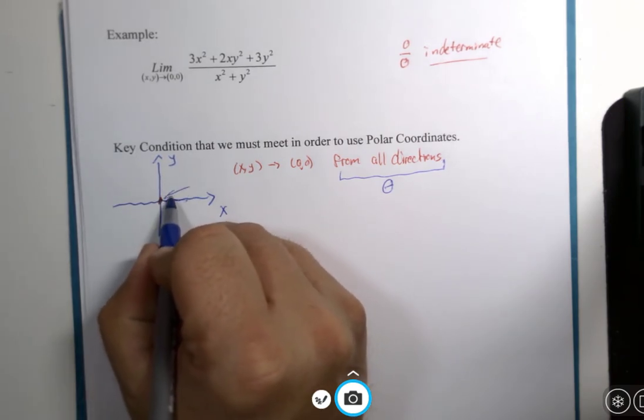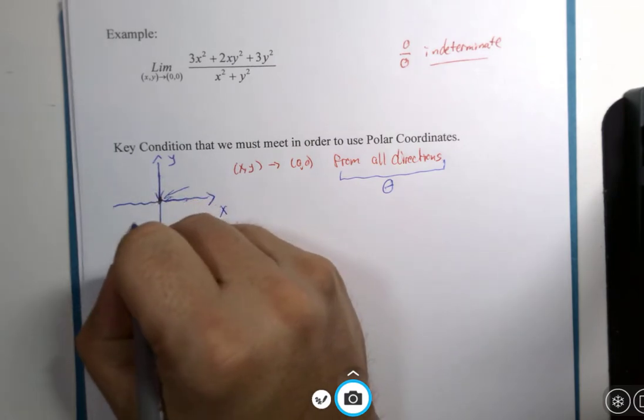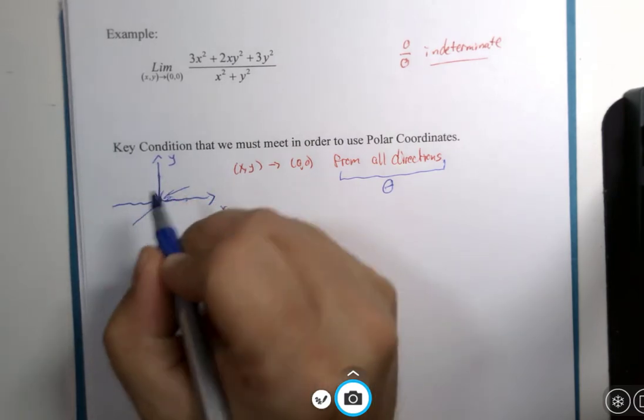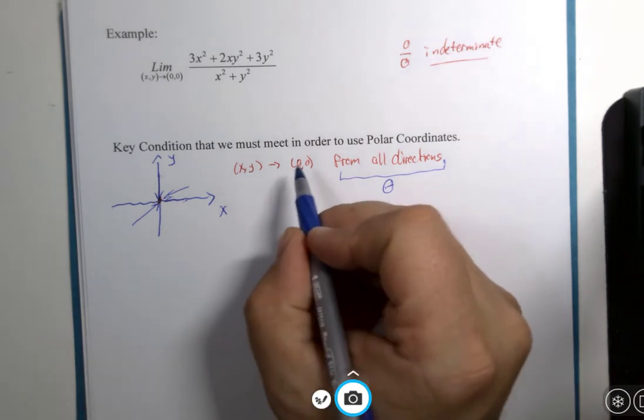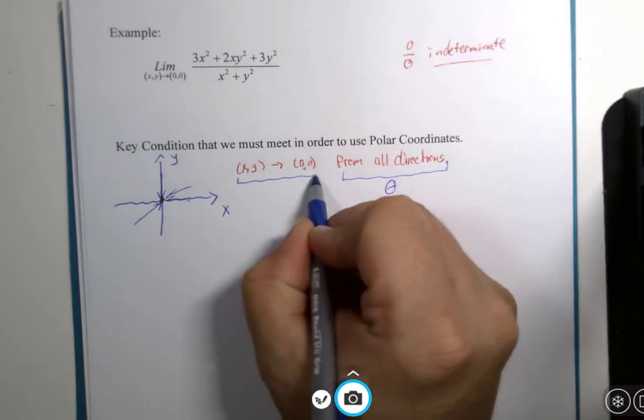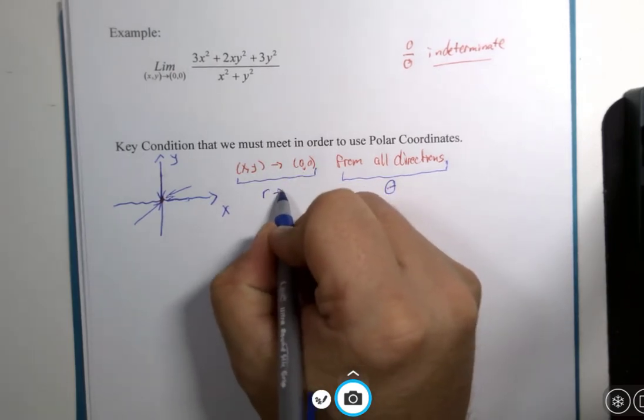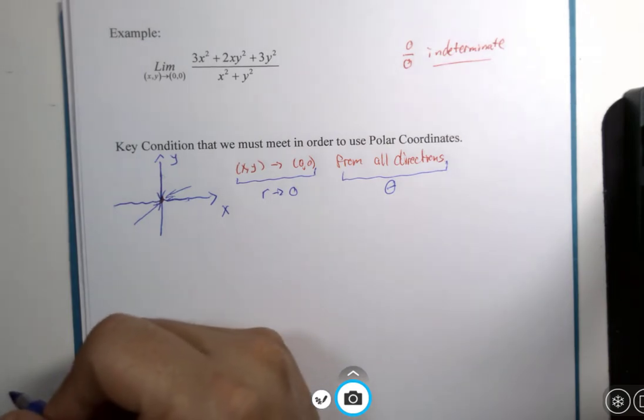Theta would be our direction. Theta could be zero, theta could be pi over six, theta could be pi over two, theta could be five pi over four, theta could be any value we want, 17.29 degrees if you want. But here is the kicker. If you're approaching the origin, this means that r is approaching zero. It doesn't matter what the direction is. It doesn't matter what the direction is if r is approaching zero.